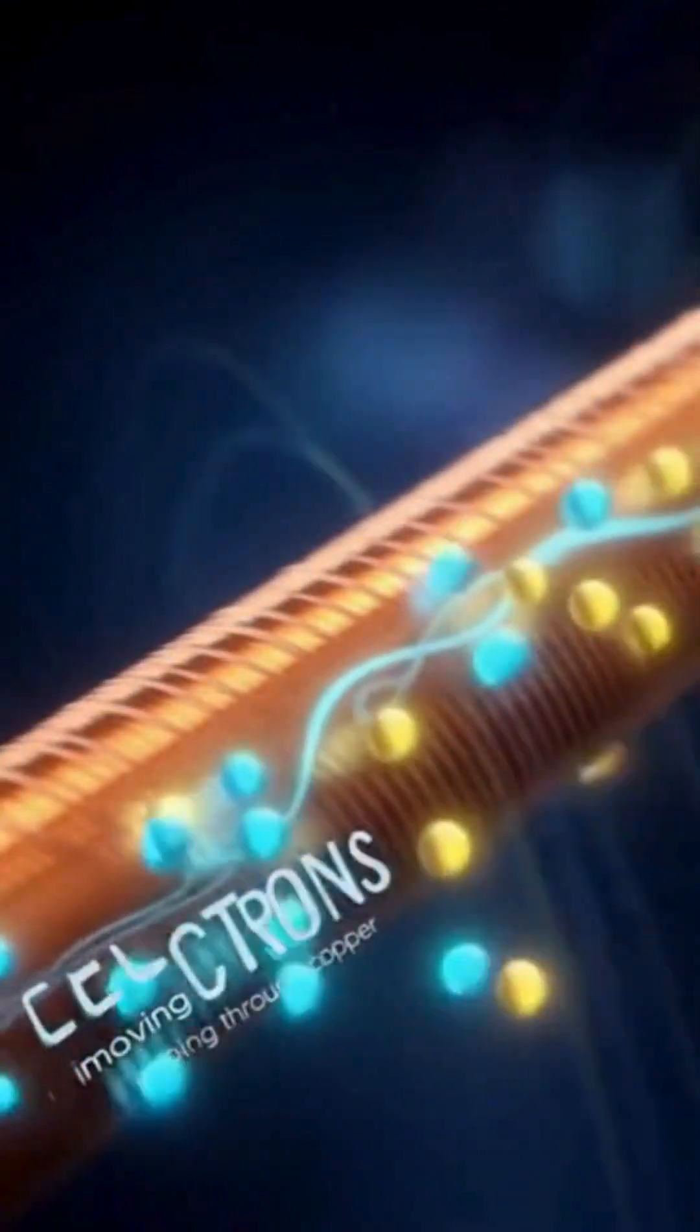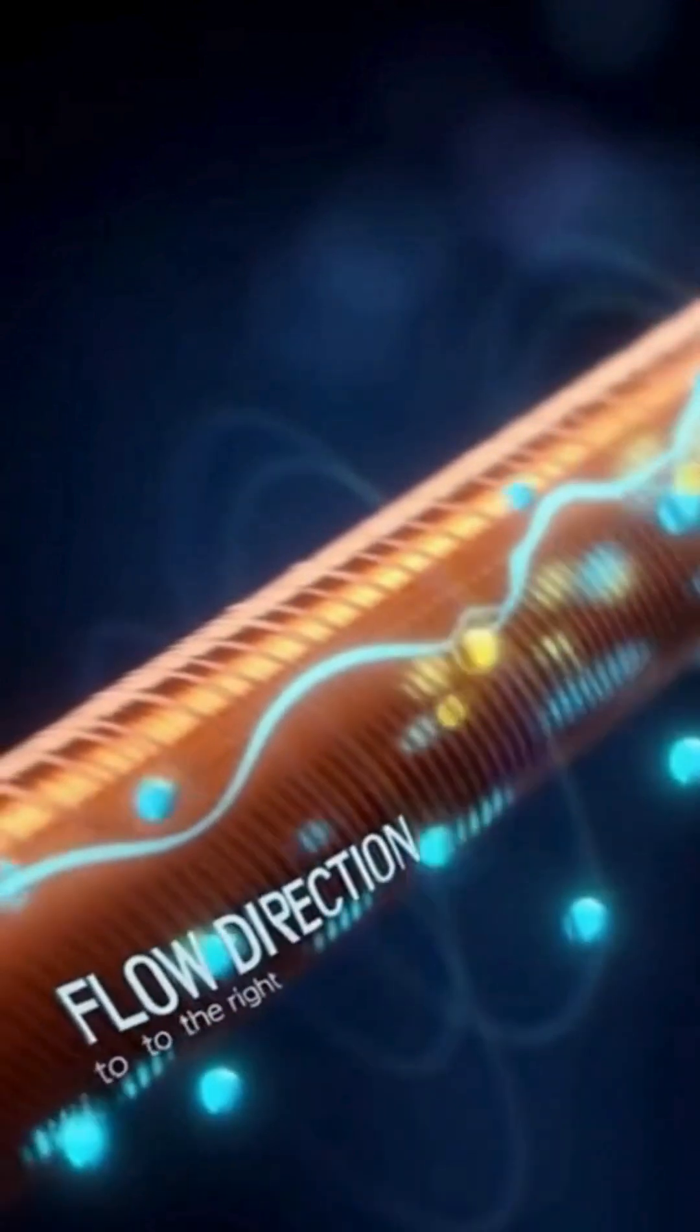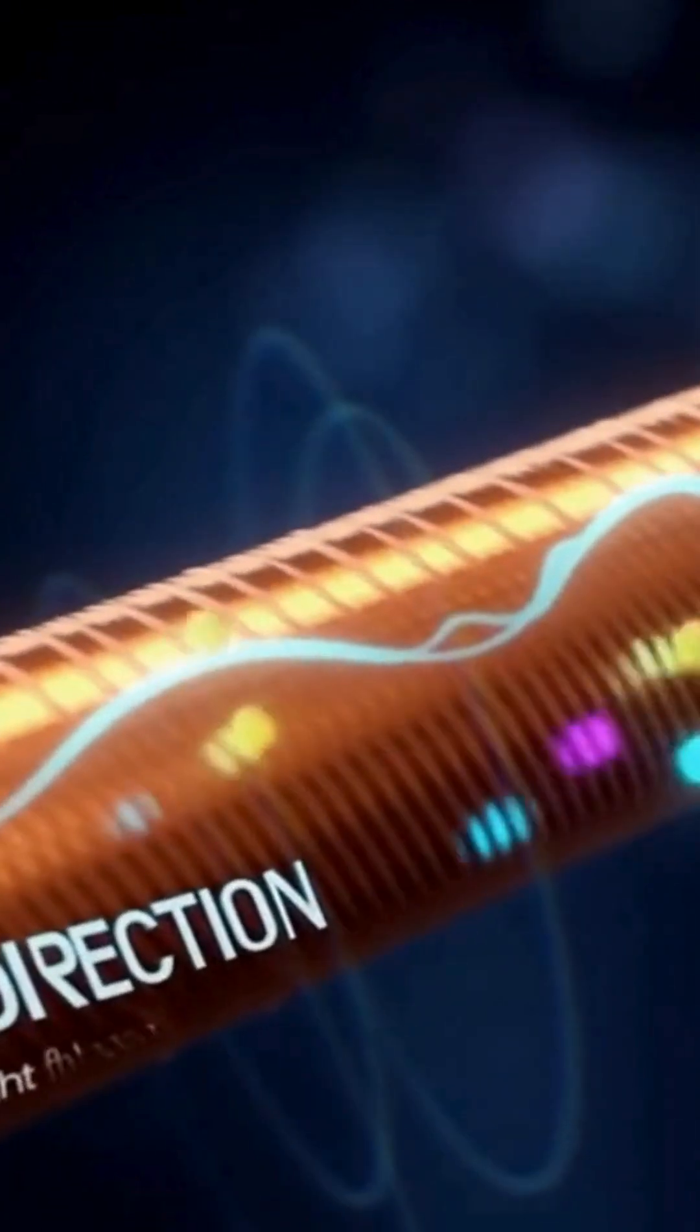Inside a copper wire, electrons drift from atom to atom, creating an electric current. Their motion is slow, yet the energy they carry travels quickly down the wire as electromagnetic waves.